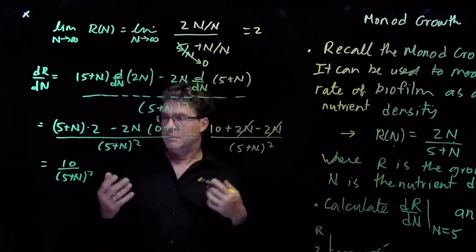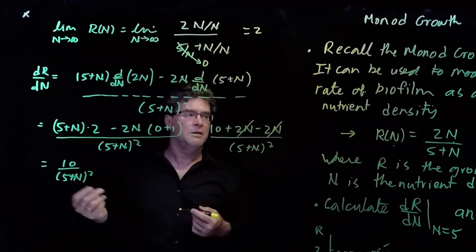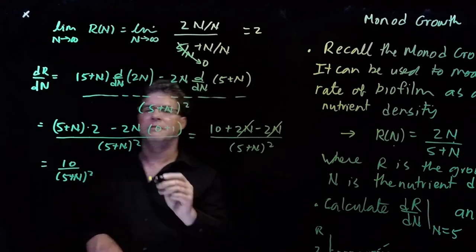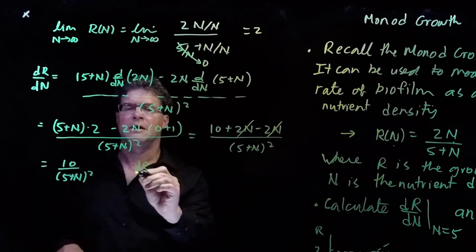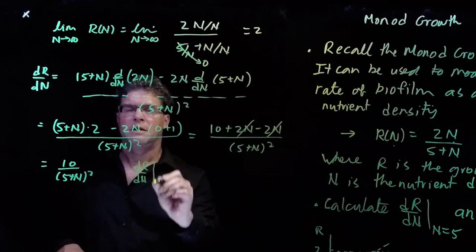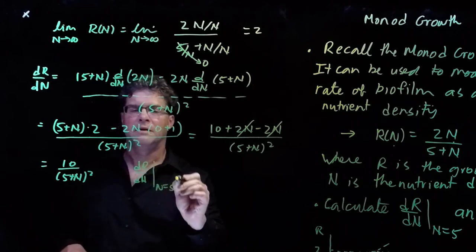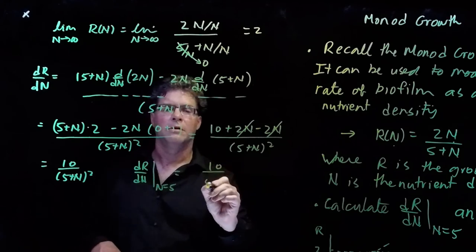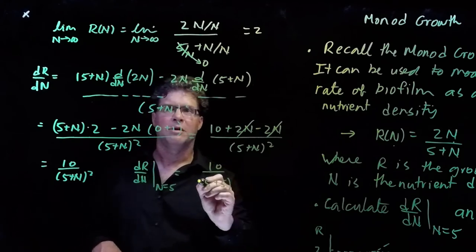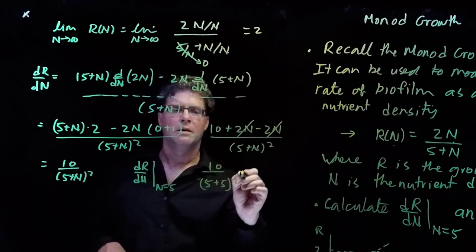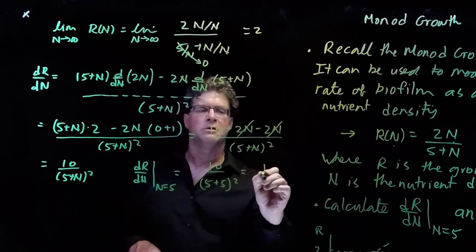So we have the derivative. And we want to calculate its value at n equals 5. So dr/dn at n equals 5 would be 10 over 5 plus 5 squared, which is 10 over 10 squared, which is 1 tenth.